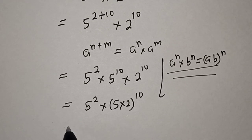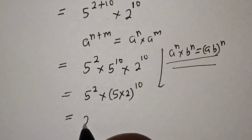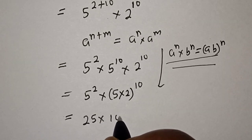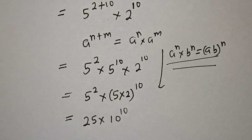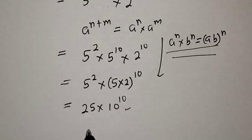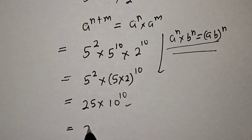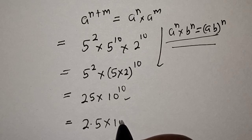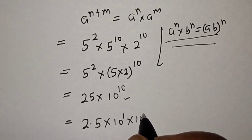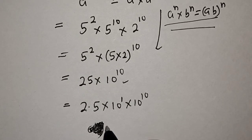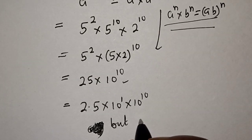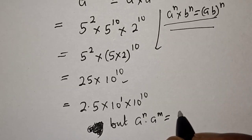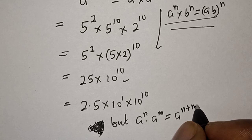So this is equal to 5 squared — that is 25 — times 5 times 2, that is 10 raised to the power of 10. Now, in order to put this in standard form, this becomes 2.5 times 10 raised to the power of 1 multiplied by 10 raised to the power of 10. But A raised to the power of N multiplied by A raised to the power of M is equal to A raised to the power of N plus M.